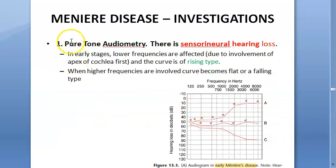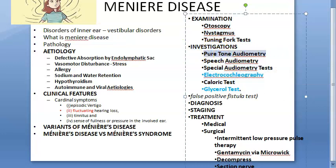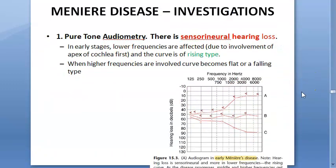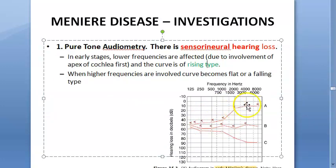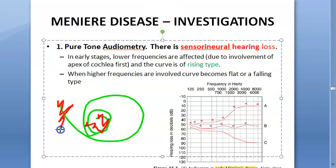Moving to investigations: pure tone audiometry will show sensorineural hearing loss. In early stages there is a rising-type curve because the apex of the cochlea is affected first, meaning low frequencies are lost first. In later stages, high frequencies become involved, producing a falling-type curve.